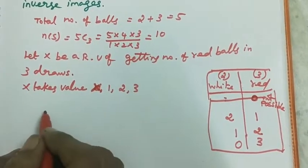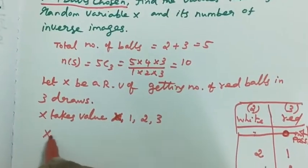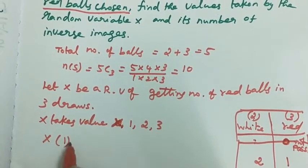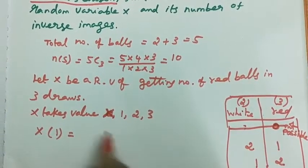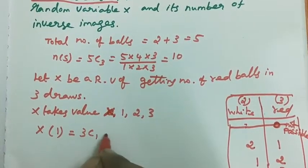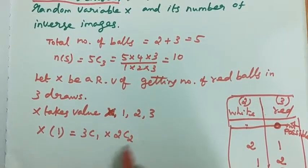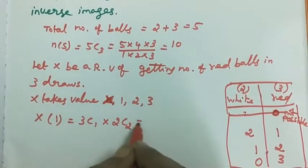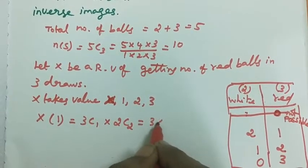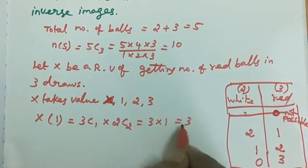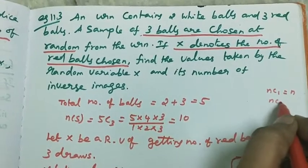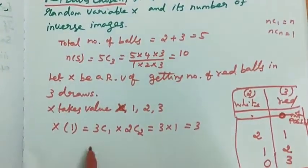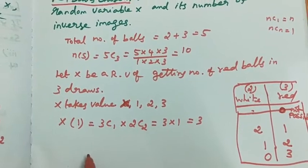Now for x=1: out of 3 red balls we take 1, and out of 2 white balls we take 2. So the number of inverse images is 3C1 into 2C2. 3C1 equals 3, and 2C2 equals 1 (since nCn = 1). So the result is 3.